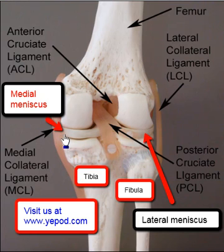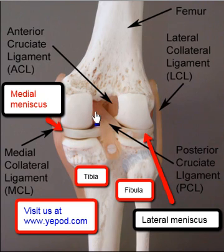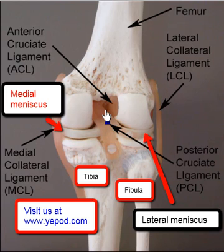We also will see the medial meniscus. And we have a very unique arrangement of ligaments located in the inner portions between the femur and the tibia. We call these the cruciate ligaments.